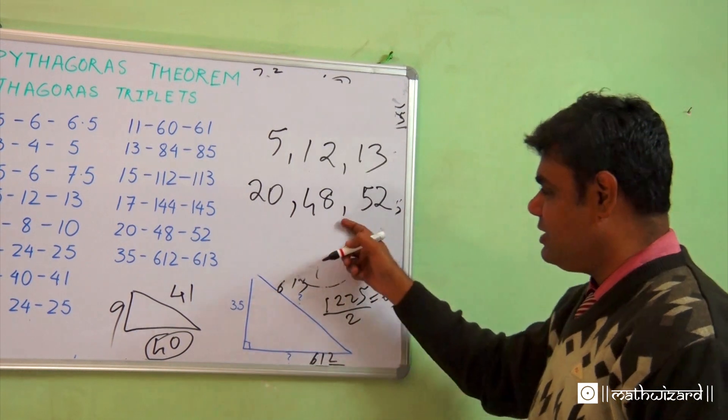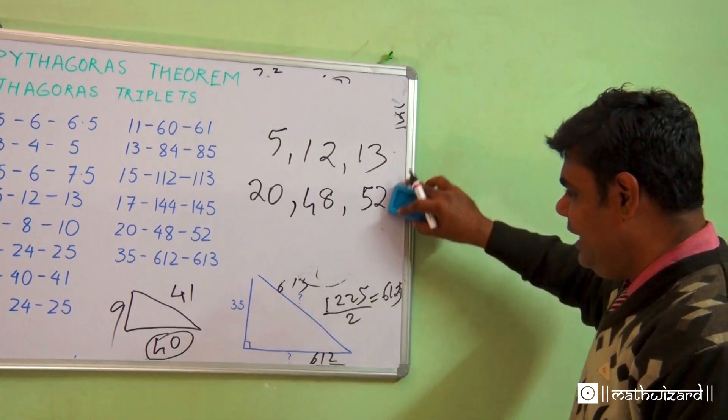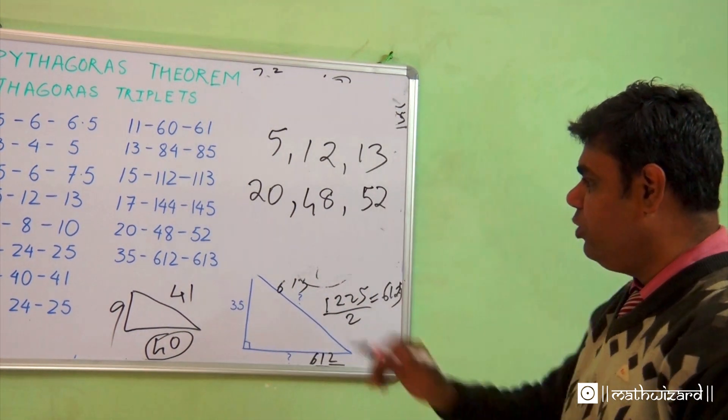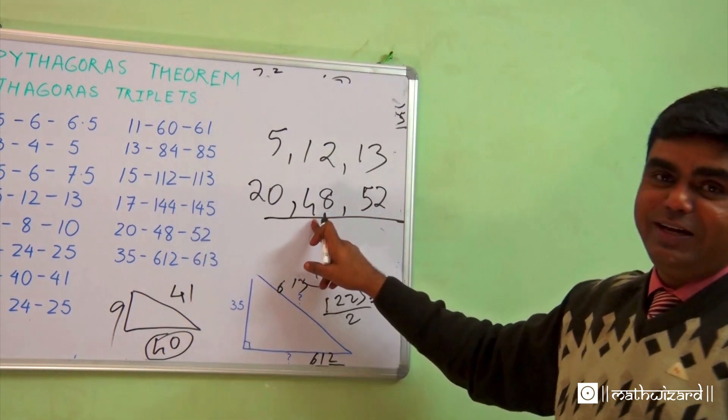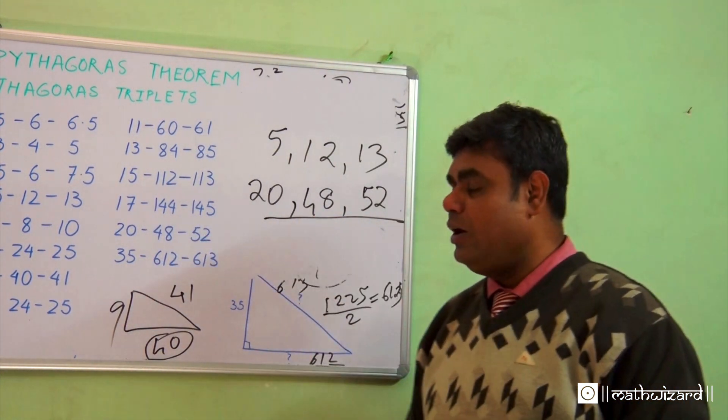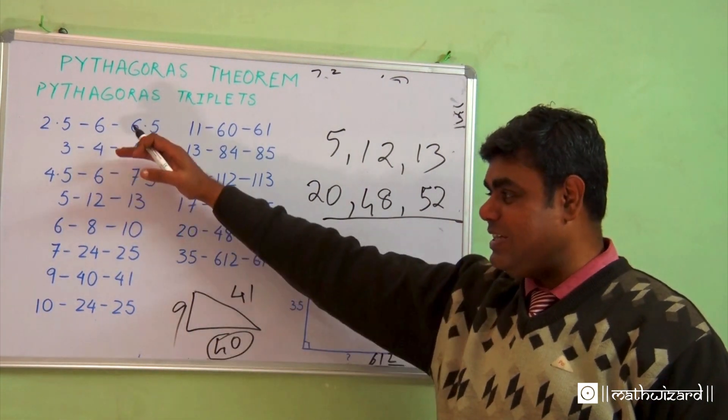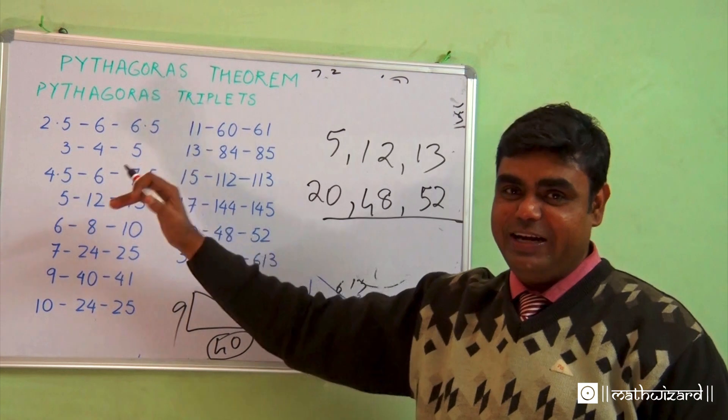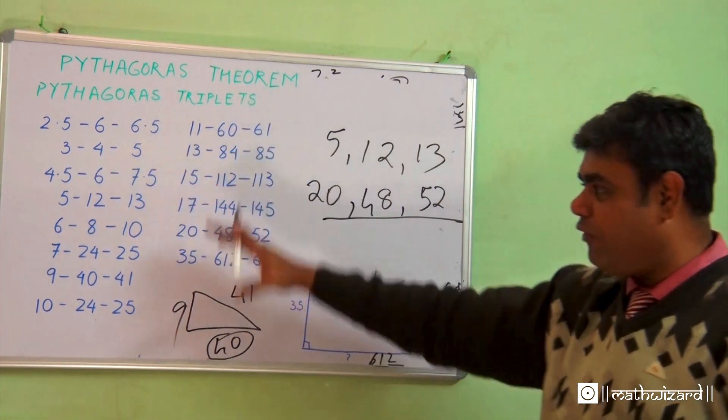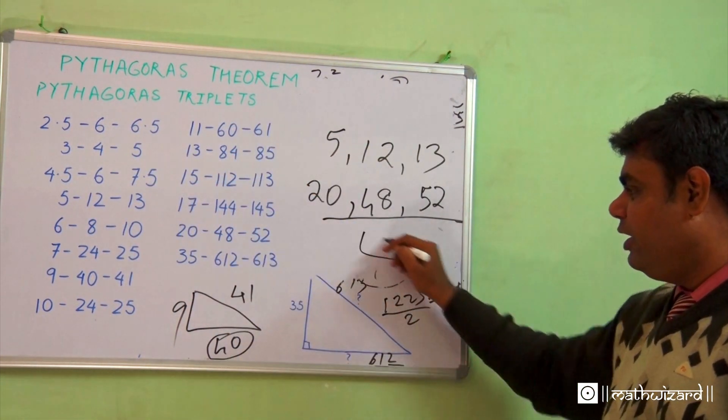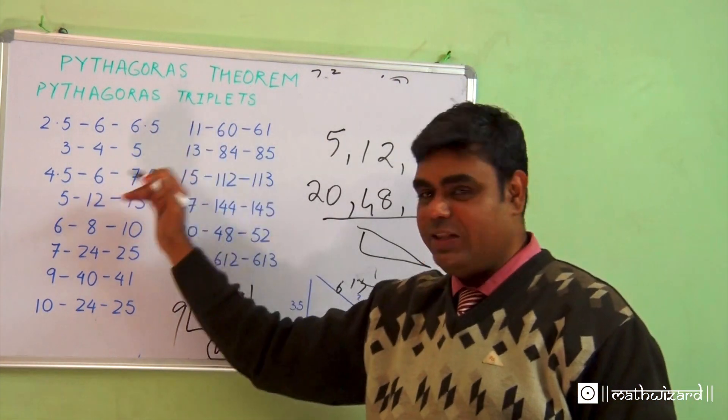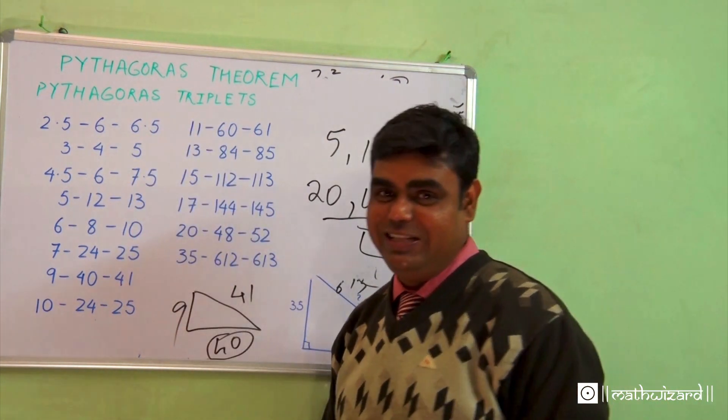If I've done correctly, the answers are 20, 48, and 52 is my triplet. Just have a look, there is a triplet. By this, you need not even solve it. It can be done mentally, and these things are very handy in day-to-day studies. Instead of long, lengthy working it out, you can simply use this for your advantage in senior classes.